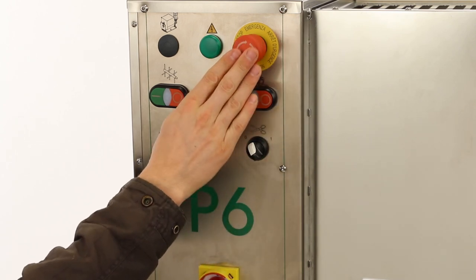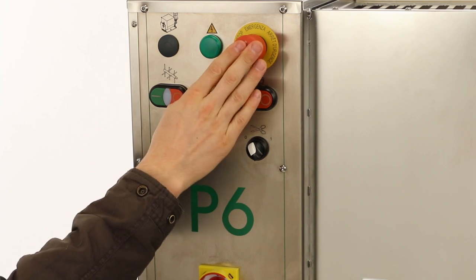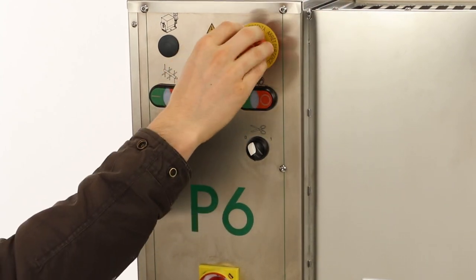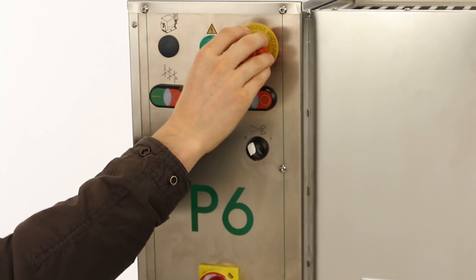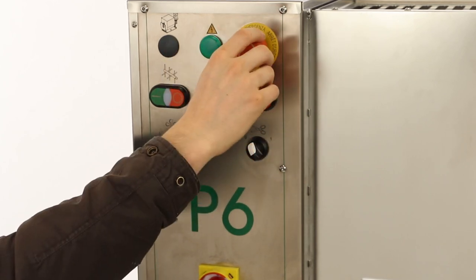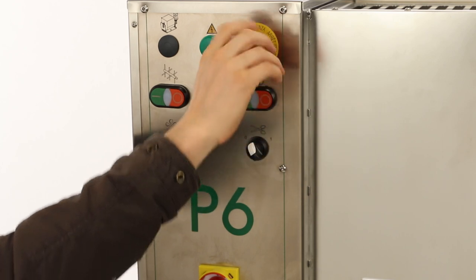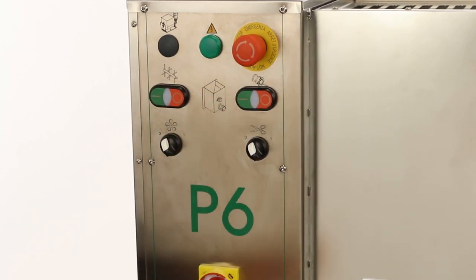Up here on the top right, we've got the emergency stop or the slam switch. When the button is depressed, it will stay depressed and prevent the machine from operating. To release it and re-engage the machine, you need to rotate it clockwise, and the button will pop back out.